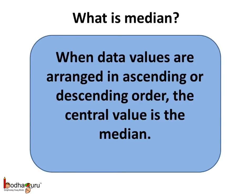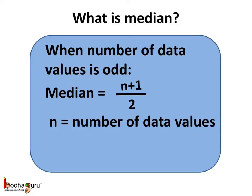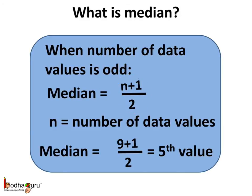Remember, children: when the data values are arranged in either ascending or descending order, the central value is the median. If the number of data values is odd, the median is exactly the middle value. The formula to find which value is the median is (n+1)/2, where n is the number of data values. For example, if n is 9, then the median is the (9+1)/2 = 10/2 = 5th value in the data.